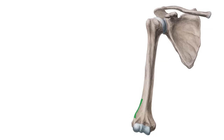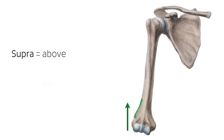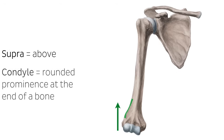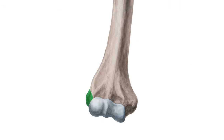Now, let's talk about the word supracondylar. That sounds scientific and tricky, but we can break that down too. Thanks to the magic of Latin, supra means above, and condyle is defined as a rounded prominence at the end of a bone. So we know it's above a round part at the end of the bone. This is the lateral epicondyle seen just below the lateral supracondylar ridge — epi means upon. Just a little Latin goes a long way in memorizing anatomical structures.